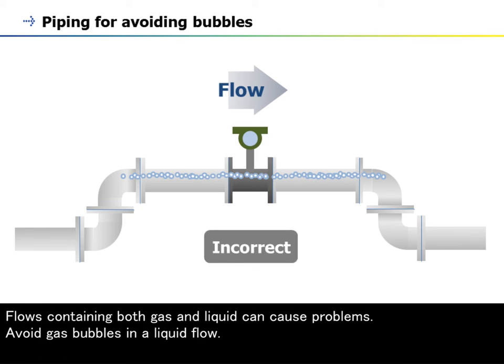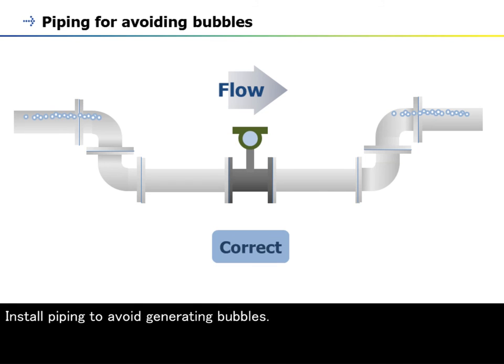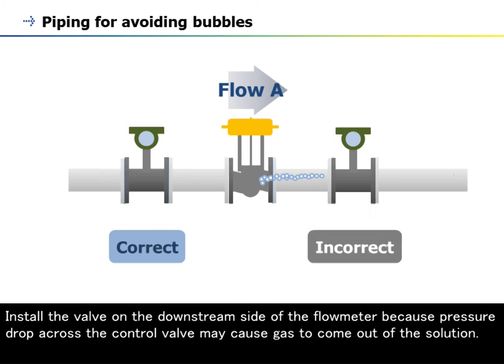Flows containing both gas and liquid can cause problems. Avoid gas bubbles in a liquid flow. Install piping to avoid generating bubbles. Install the valve on the downstream side of the flow meter, because pressure drop across the control valve may cause gas to come out of the solution.